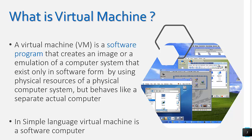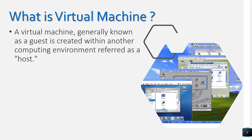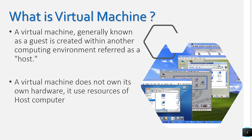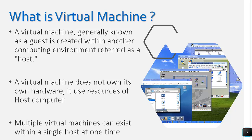In simple words, a virtual machine is a software computer. A virtual machine is generally known as a 'guest,' and the physical computer on which a virtual machine is created is known as the 'host.' A virtual machine does not have its own hardware — it uses the resources of the host computer. Multiple virtual machines can exist within a single host at any one time.